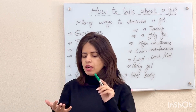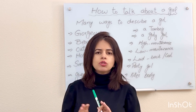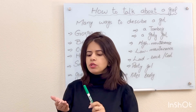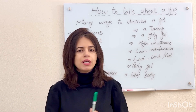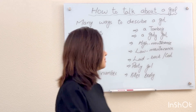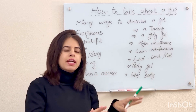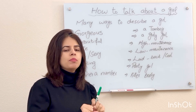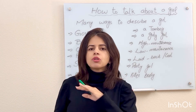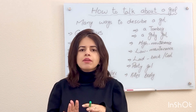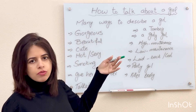We usually have some common words like 'she is beautiful,' but instead of using just one or two words, I have a vast vocabulary to describe a girl. So let's start our lesson. There are many ways to describe a girl — her personality and her physical look. We can say she is such a gorgeous girl.